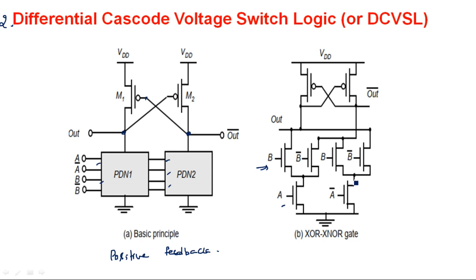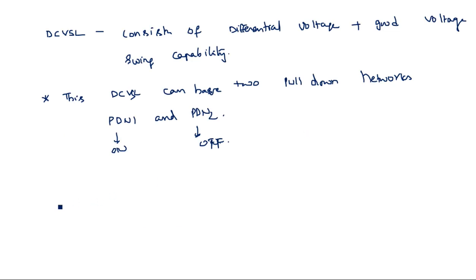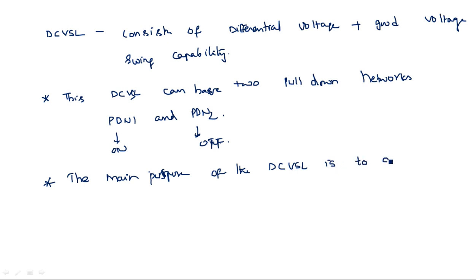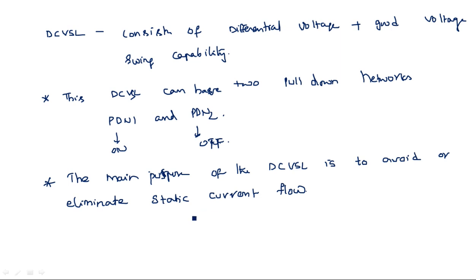Input A is given on the left hand side and A-bar on the right hand side; similarly B and B-bar. The main purpose of differential cascode voltage swing logic is to avoid or eliminate static current flow.